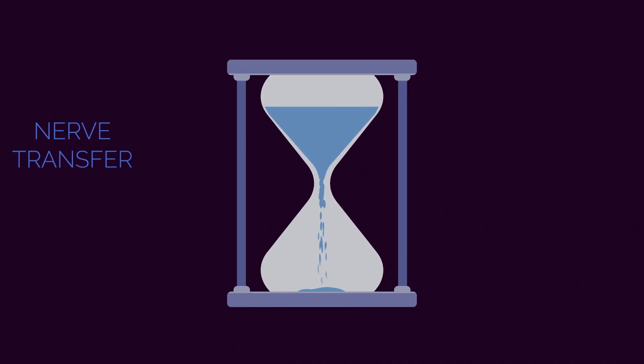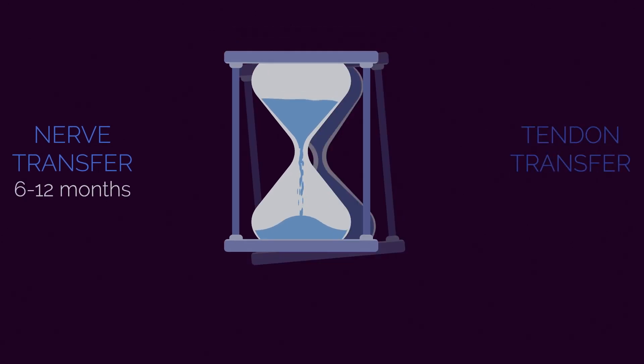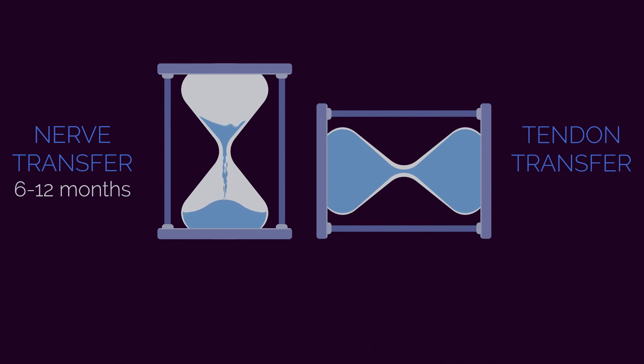The best time for nerve transfer is within 6-12 months after injury, while tendon transfer can be done at any time.